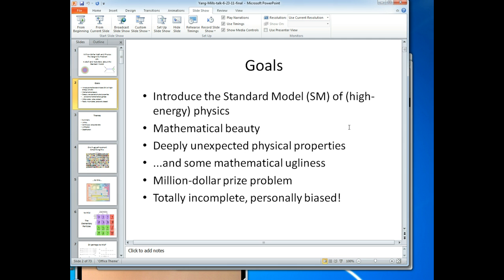So the goals here, I want to introduce the standard model of high energy physics very much from a mathematician's point of view, although I'm not going to focus necessarily on rigor until the end, but I want to show you the mathematical beauty of it. I want to talk a bit about the deeply unexpected physical properties that it says our universe has. And hopefully get to some of the mathematical ugliness. In fact, the ugliness is kind of what the problem is about. How do you get rid of the ugliness? Or at least deal with it. And at the end, we'll talk about what is the million dollar prize problem and why is it important.